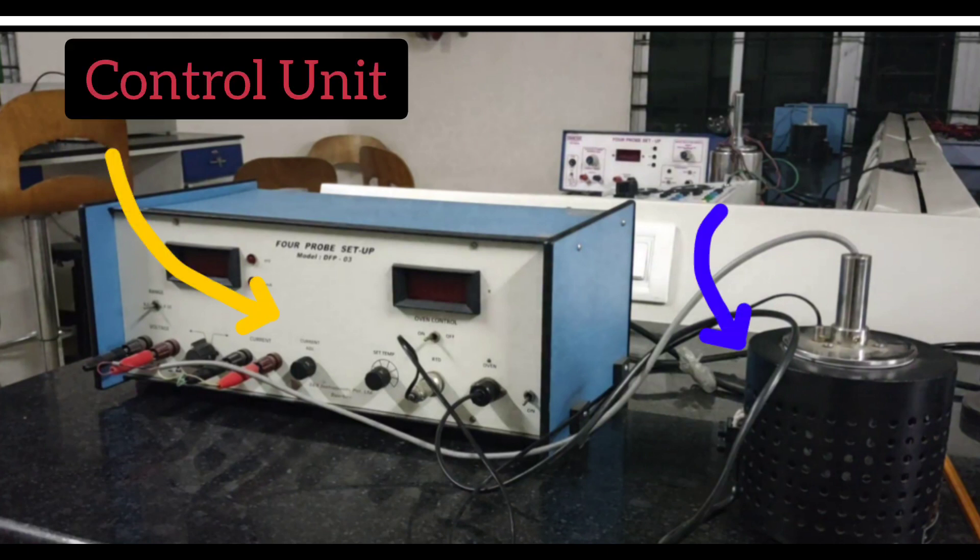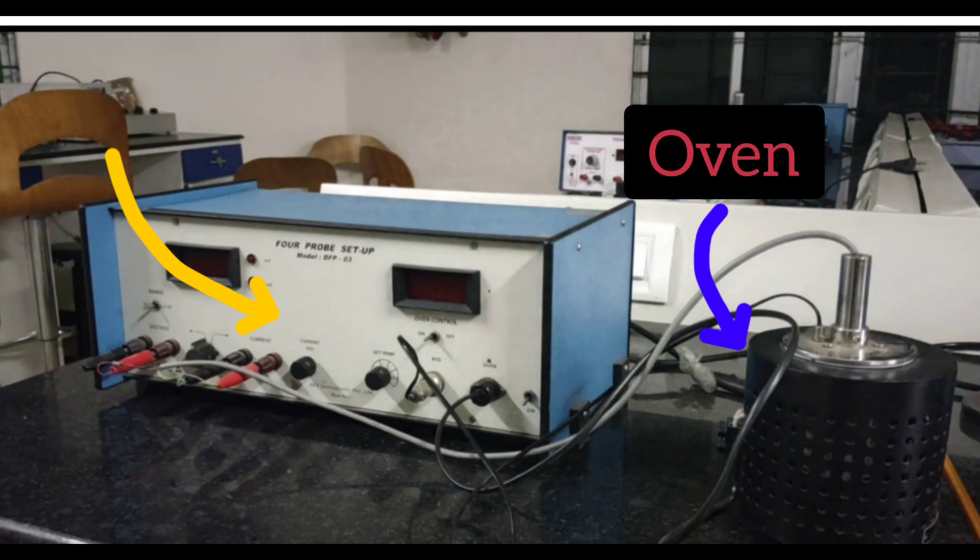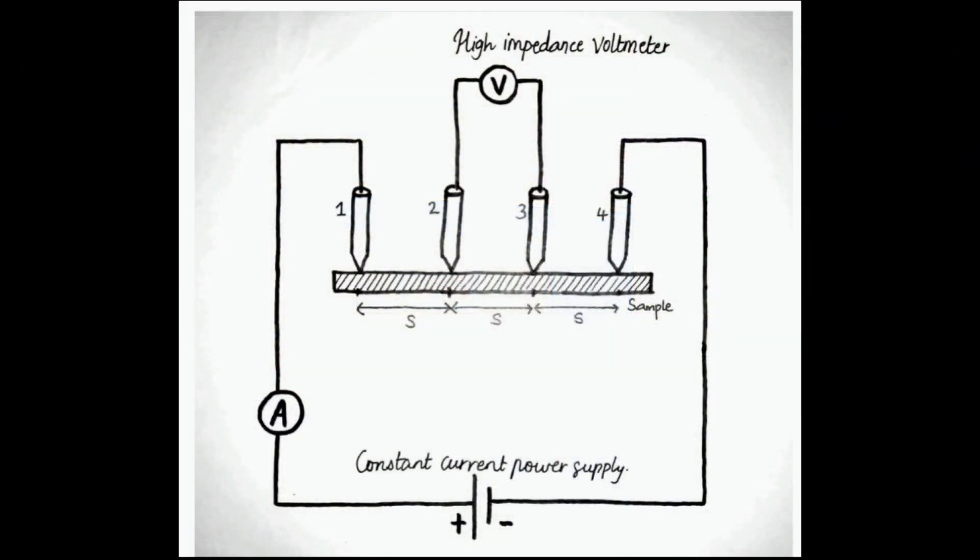Inside the oven there is the four probe. The schematic diagram of the four probe shows four equally spaced tungsten metal tips with finite radius, where the outer tips will be connected to a constant DC current power supply and the inner two metal tips will be connected to a high impedance voltmeter.